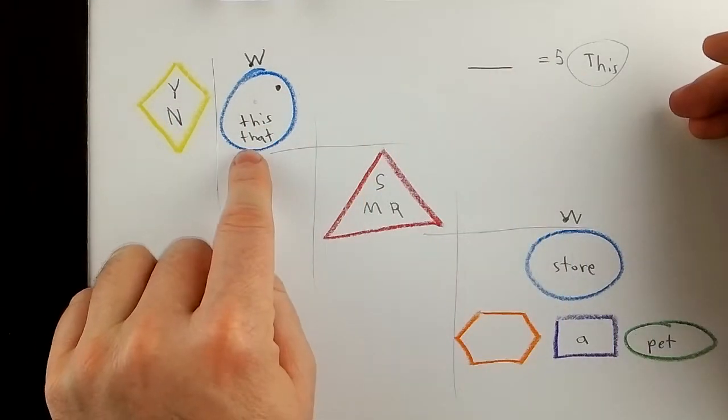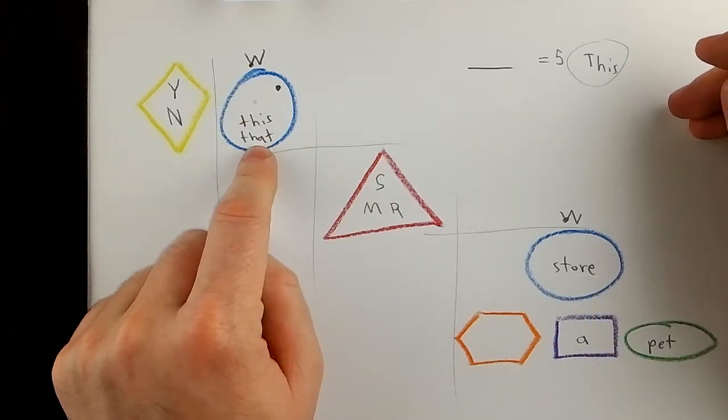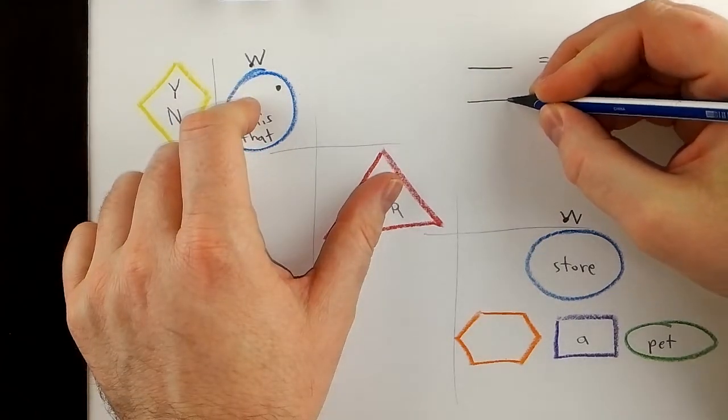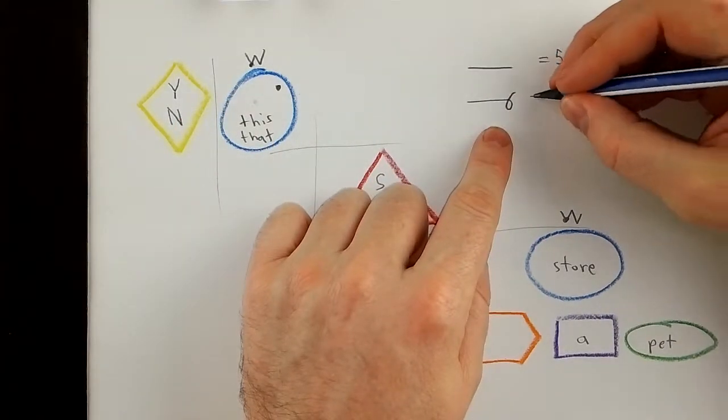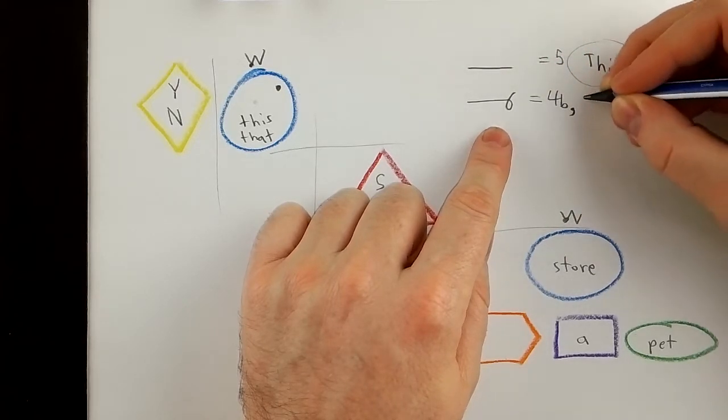That's a pet store. No, no, no. That. So it's. So this equals 4B and then number five.